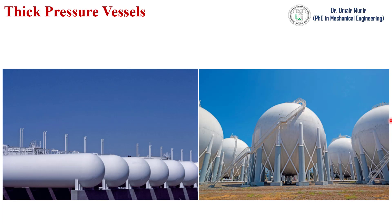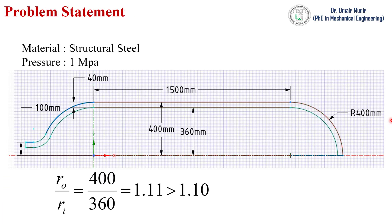In this video we will find out the hoop stress and longitudinal stress in thick pressure vessels. In our previous video we found these stresses in thin pressure vessels. The difference between the thick pressure vessel and a thin pressure vessel is that the ratio of outer radius to inner radius in the thick pressure vessel is greater than 1.10.